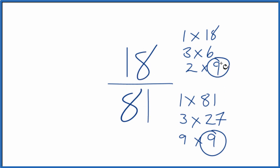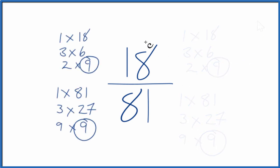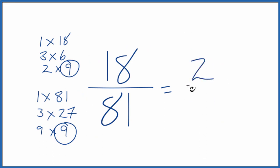So let's divide 18 by 9, then 81 by 9, and we'll have simplified the fraction 18 over 81. Let's move these over here. So 18 divided by 9, that gives us 2. And then 81 divided by 9, that gives us 9.